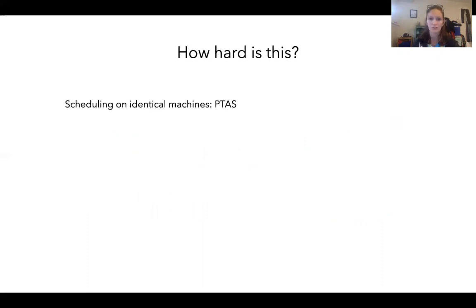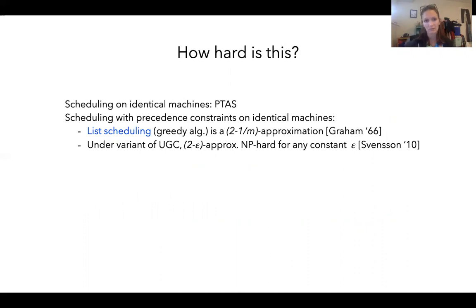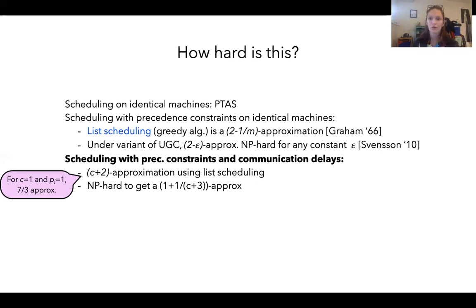How hard is the problem of scheduling with precedence constraints and communication delays? Just scheduling on identical machines without precedence constraints or communication delays has a PTAS. Scheduling with precedence constraints on identical machines is well understood: the greedy list scheduling algorithm gives a 2 minus 1 over M approximation, and more recently under a variant of the unique games conjecture, a 2 minus epsilon approximation is NP-hard for any constant epsilon. With both precedence constraints and communication delays, the best known upper bound is a C plus 2 approximation using the greedy list scheduling algorithm. When C is very large — maybe N to some power — this is not great, and there's an NP-hardness result for a 1 plus 1 over C plus 3 approximation, creating a huge gap.